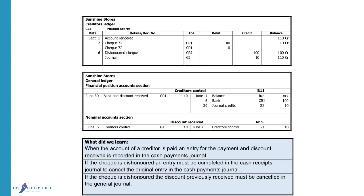In the creditors ledger, the original entry was made on the debit side when we paid by check. The discount received was also recorded on the debit side. When the check is dishonoured, we have to cancel that original entry and show that we owe R200 to the creditor again. Our source document will be the dishonoured check. The entry to cancel the discount is done in the journal, so the source document is the journal, and we will credit the creditor so that we increase his account.